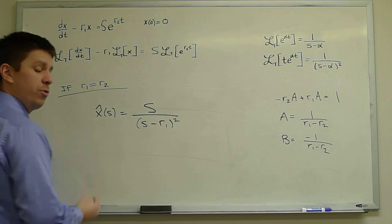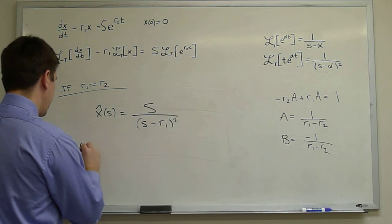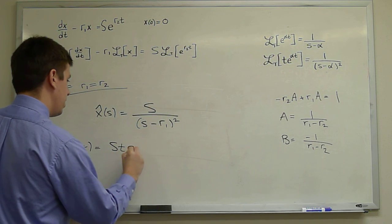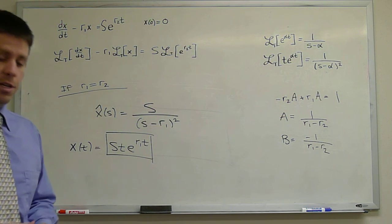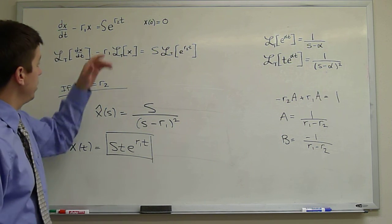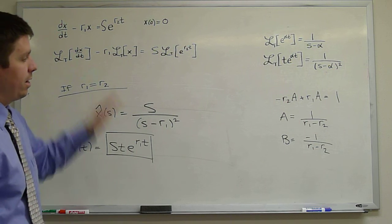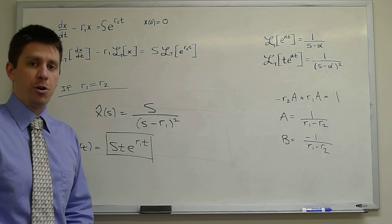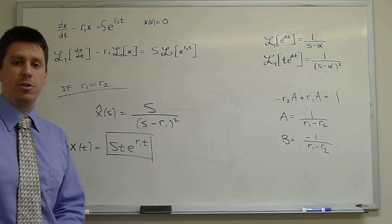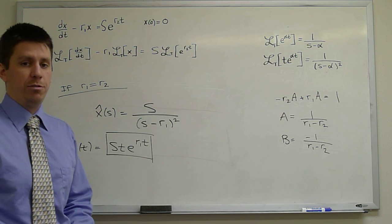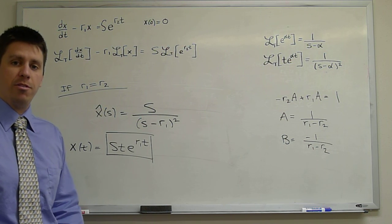So we would have immediately been able to say this would have been even easier than the problem we did solve — we wouldn't have had to do partial fractions. We could have immediately said x(t) equals capital S times t·e^(R1·t). That solution satisfies the resonant case where R1 equals R2. Laplace transforms take care of all the edge cases in undetermined coefficients automatically: they find the particular solution and homogeneous solution, automatically satisfy the initial condition, and you don't have to worry about resonant forcing. So even though it's a bit more advanced, it's a pretty slick method.